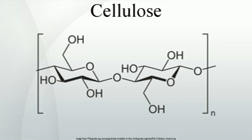Cellulose can be converted into cellophane, a thin transparent film. Cellulose is the raw material in the manufacture of nitrocellulose, which is used in smokeless gunpowder. It is the base material for the celluloid that was used for photographic and movie films until the mid-1930s. Cellulose is used to make water-soluble adhesives and binders such as methylcellulose and carboxymethylcellulose, which are used in wallpaper paste. Cellulose is further used to make hydrophilic and highly absorbent sponges.